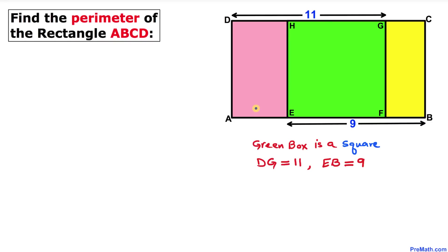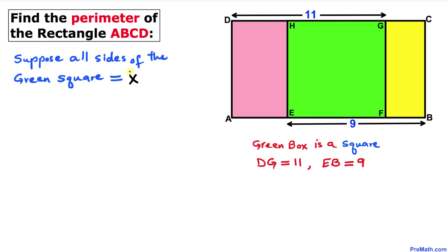Welcome to Pre-Math. In this video tutorial, we have rectangle ABCD such that the green box inside this rectangle is a square. The line segment DG is 11 units and line segment EB is 9 units. We are going to find the perimeter of rectangle ABCD. Let's go ahead and get started with the solution.